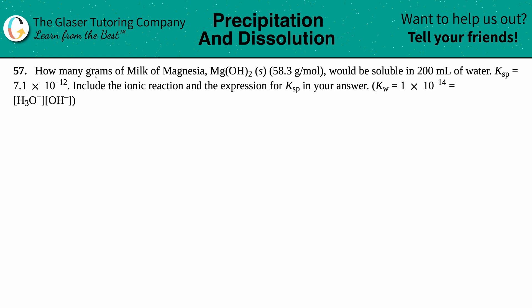Number 57: How many grams of milk of magnesia, which is Mg(OH)₂ solid, with a molar mass of 58.3 grams per mole, would be soluble in 200 milliliters of water? The Ksp is 7.1 times 10 to the negative 12. Include the ionic reaction and the expression for Ksp in your answer. They also give us Kw equals 1 times 10 to the negative 14, which equals H₃O⁺ times OH⁻.